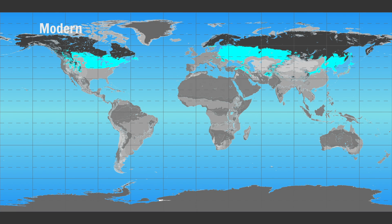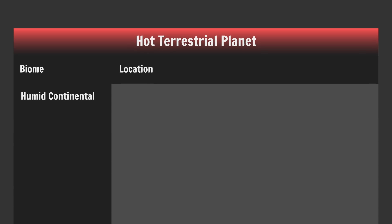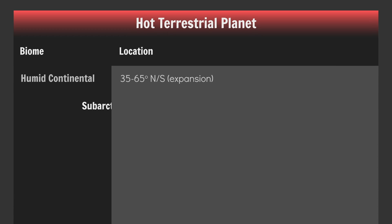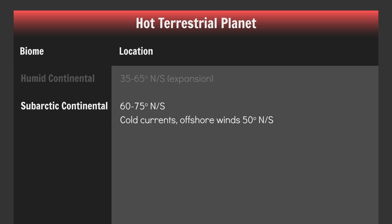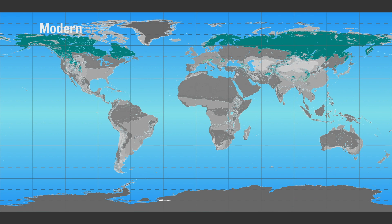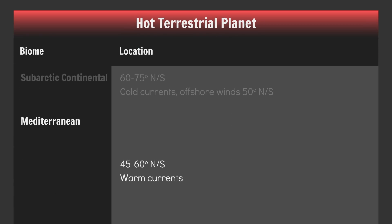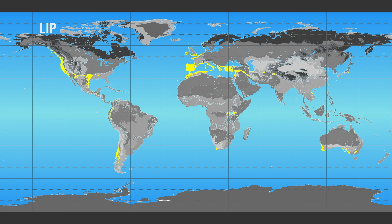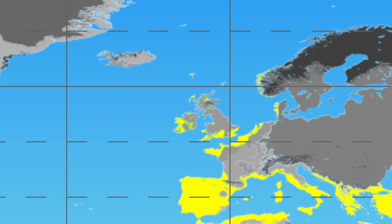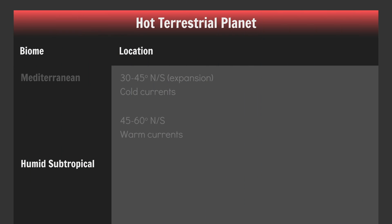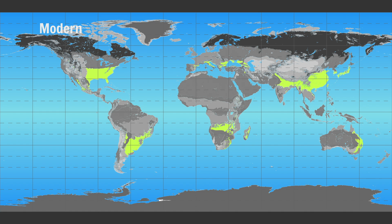In the Ferrel cell, the humid continental zone greatly increases — 35 to 65 degrees north and south should do the trick. Place your sub-arctic continental climates between 60 and 75 degrees north and south, extending the region down to about 50 degrees north and south in areas affected by offshore winds and/or cold currents. Place your Mediterranean climates between 30 and 45 degrees north and south in regions affected by cold currents — note the expansion of this zone. Also note that Mediterranean climates appear between 45 and 60 degrees north and south along warm current coasts, though the reason isn't fully clear. Place your humid subtropical climates between 20 and 45 degrees north and south in regions affected by warm currents.